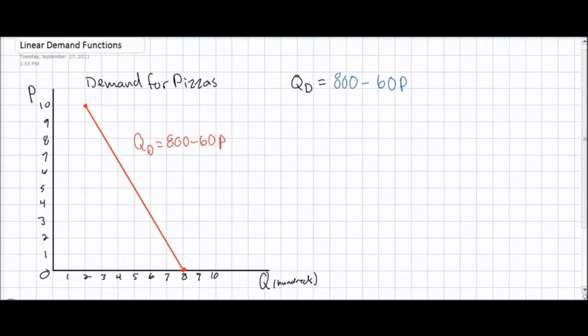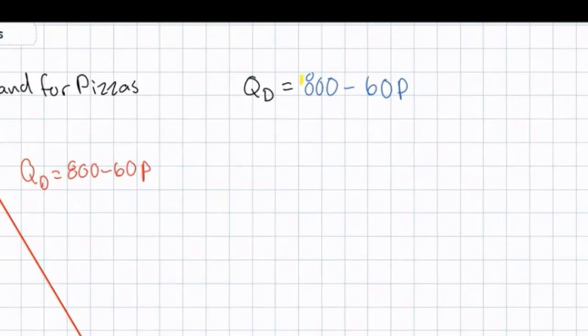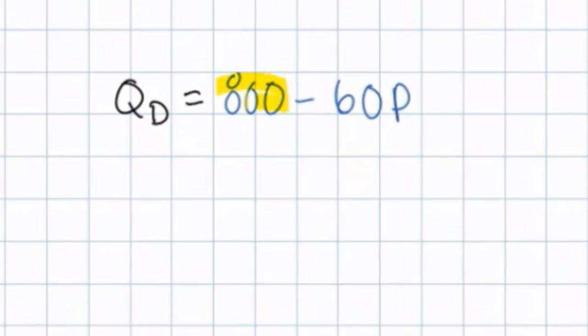Today's video lesson is the second part in a lesson on linear demand equations. In this video lesson we're going to look at the same equation as we did in our first lesson. However, today we're going to talk about the factors that can cause a change in the A variable in our demand equation. The A variable refers to the autonomous level of demand or the Q intercept of the demand curve.